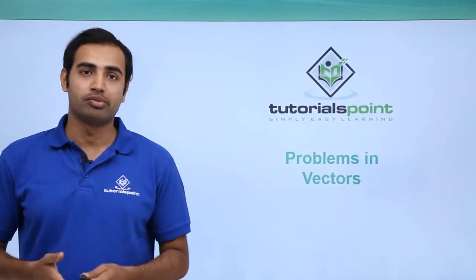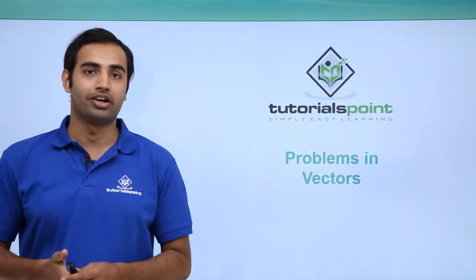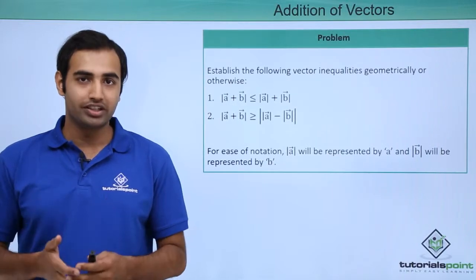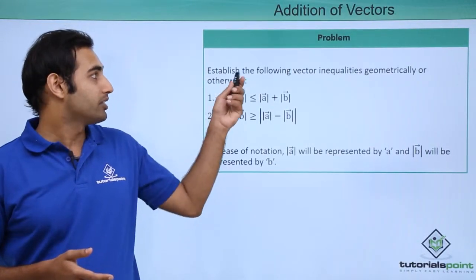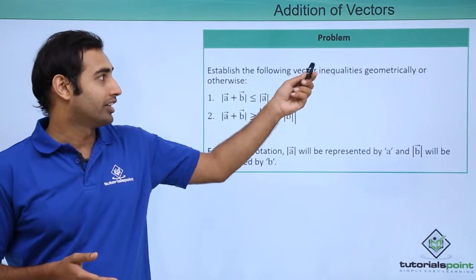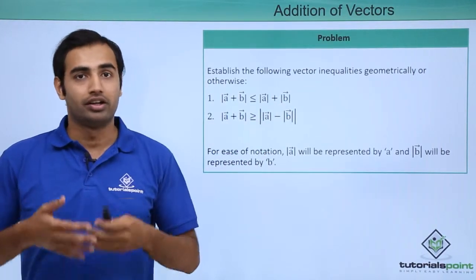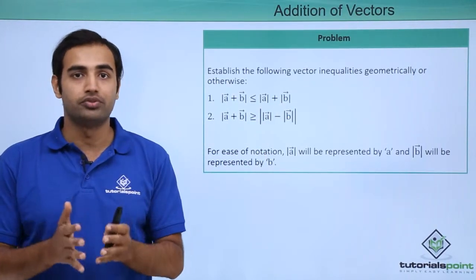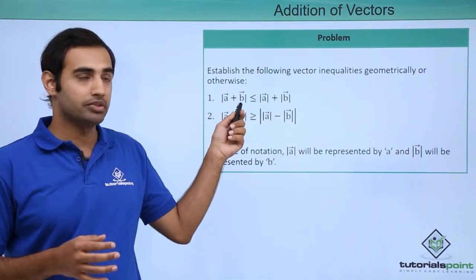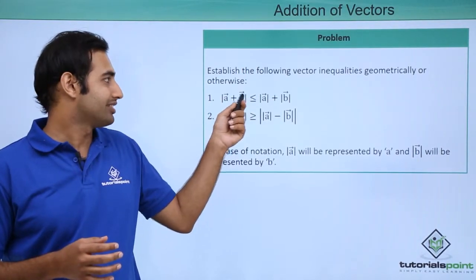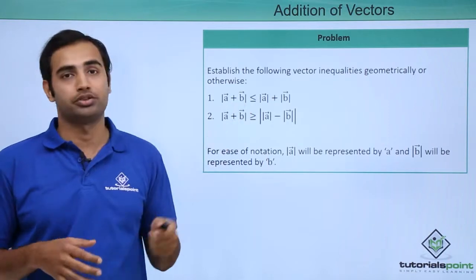Let's talk about the next problem in vectors, which is about the addition of two vectors. We have a problem that says: establish the following vector inequalities either geometrically or otherwise. The first inequality we have to prove is that the magnitude of vector A plus B is always less than or equal to magnitude of A plus magnitude of B.